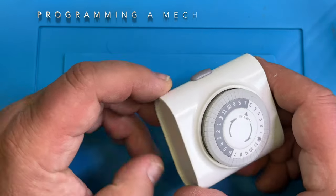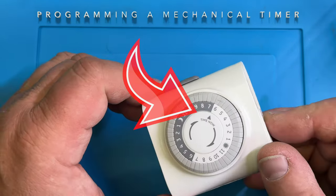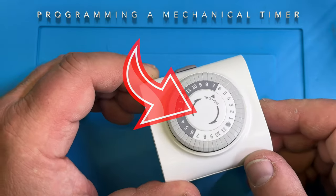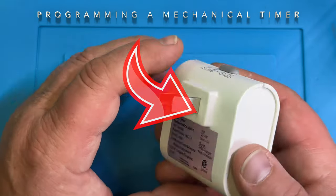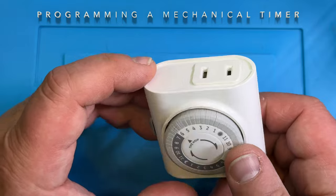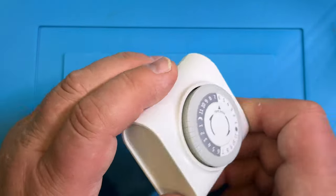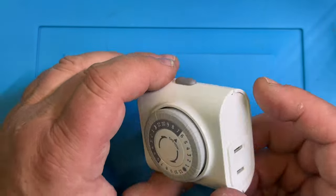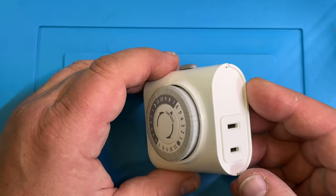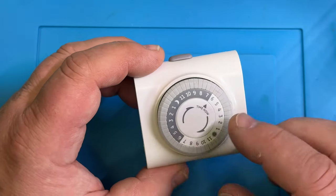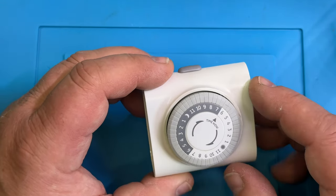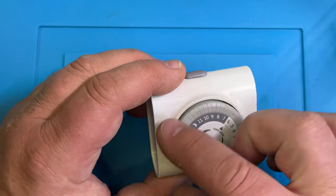Daily scheduling of lighting, decorations, and other devices is quick and simple with a plug-in mechanical timer like this one. The programming for all models of plug-in mechanical timers is the same regardless of the features. You control the timer in 30-minute increments by using those pins.